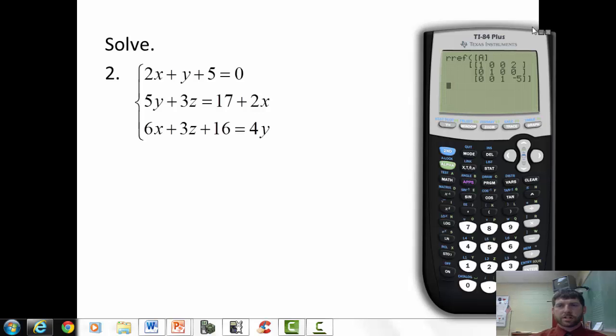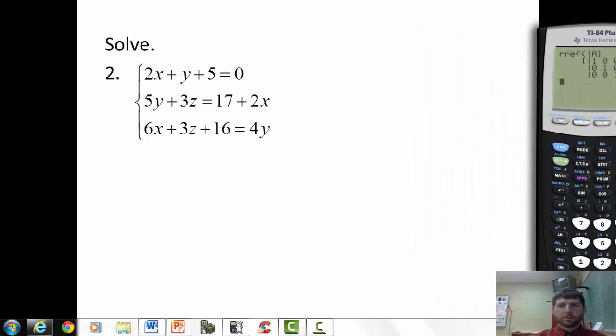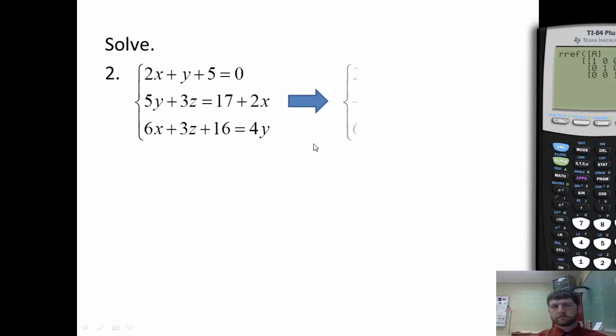Now, as we remember, first step is to get the x's, y's, z's, and equals all lined up. So we're going to do that first. So I'm going to subtract my 5 over. There's my 5 subtracted over. Subtract my 2x over to the left. So negative 2x plus 5y plus 3z equals 17. So we're just doing some rearranging of the equation. Subtract the 4y over. Subtract the 16 over. And we've got our system.